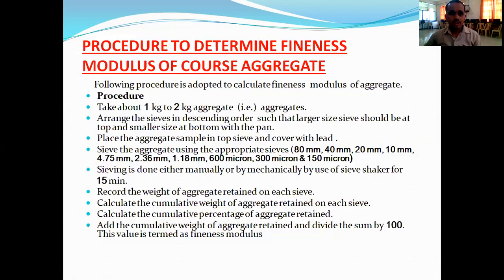The first test is to determine the fineness modulus of an aggregate. The procedure is as shown. The required apparatus includes the sieve sizes as stated in the procedure, a weighing machine, a pan, and a sieve shaker if available — or sieving can be done manually.